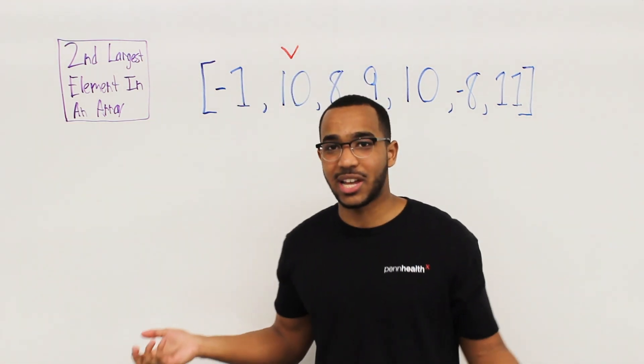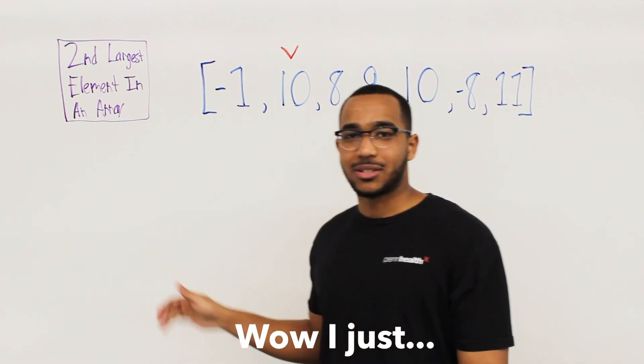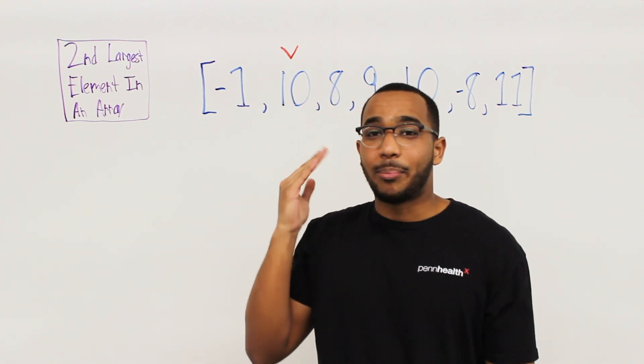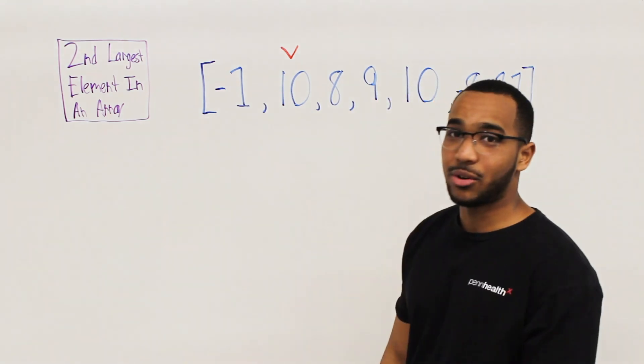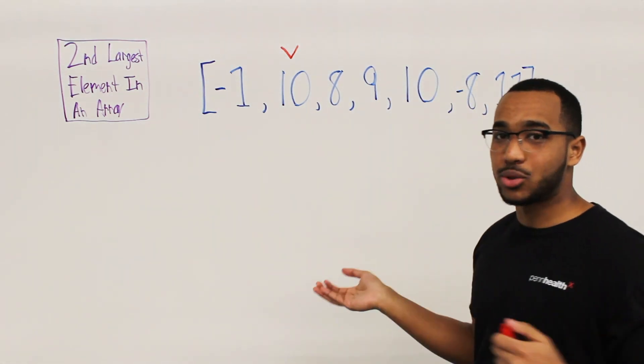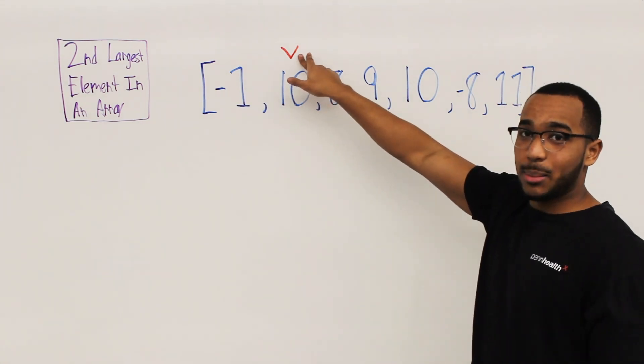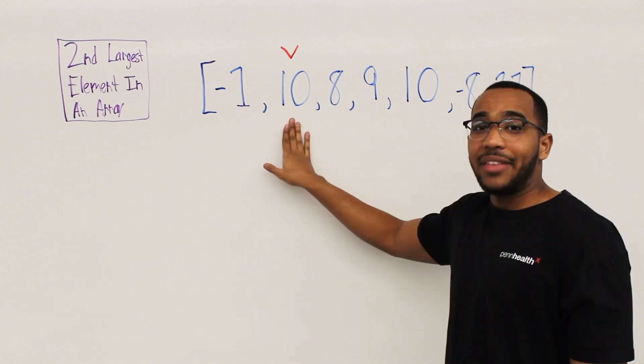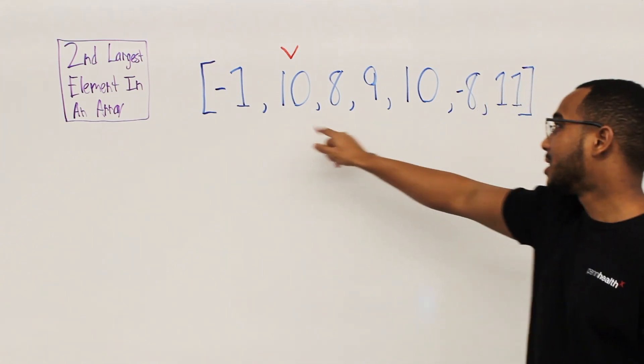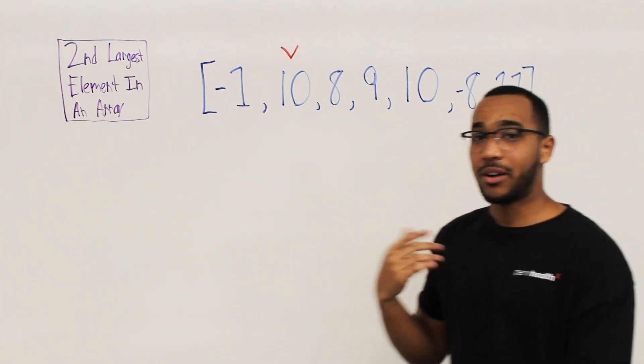But apparently for this question, we need to find the second largest element in the array. We have an array here. It might be sorted, it might not be sorted. So the second largest element here is going to be 10 because the largest element is 11. And then the second largest is 10. It could be this 10, it could be this 10, either of those.